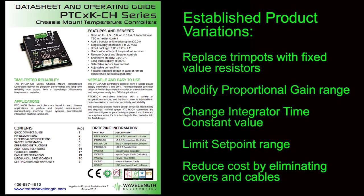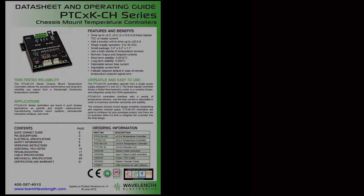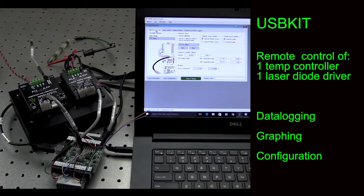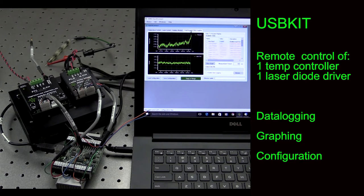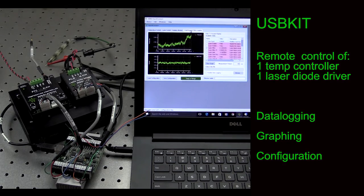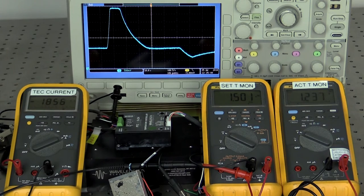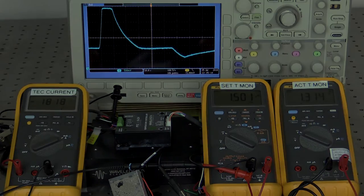We also offer product variations to optimize the hardware for your specific needs, such as replacing trim pots with fixed value resistors, modifying the proportional gain range, changing the integrator time constant, limiting the setpoint range, or reducing the cost by eliminating covers and cables. One of the fun products we've developed provides remote computer control of the PTC. The USB kit comes with quick connect software that allows remote control of one temperature controller and one laser diode driver. If you need precise, safe, robust temperature control, the adaptable PTC series offers many advantages.